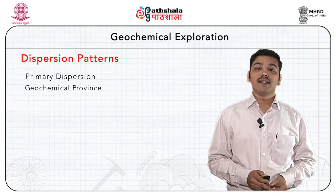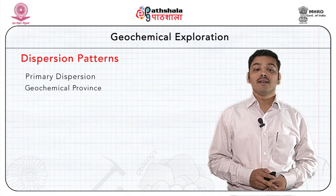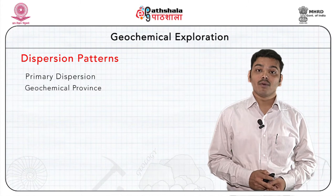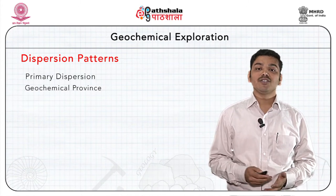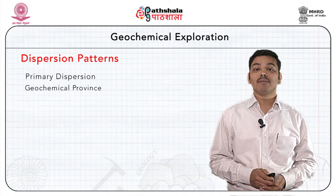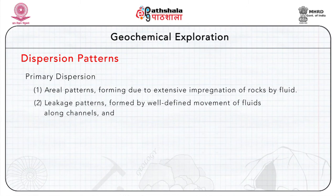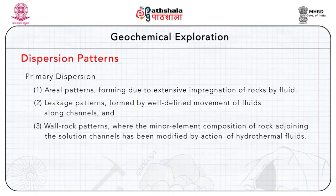Patterns of hydrothermally dispersed elements appear as geochemical anomalies with a particular geometry signifying the fluid flow pattern or path. Based on geometry, primary dispersion patterns resulting from hydrothermal fluid movement can be classified as: aerial patterns forming due to extensive impregnation of rocks by fluids; leakage patterns formed by well-defined movement of fluids along channels; or wall rock patterns where the minor element composition of rock adjoining the solution channels has been modified by the action of hydrothermal fluids.